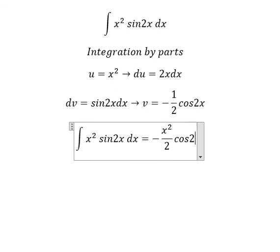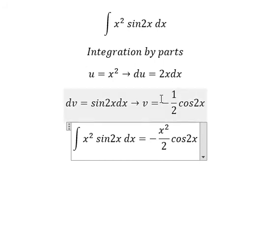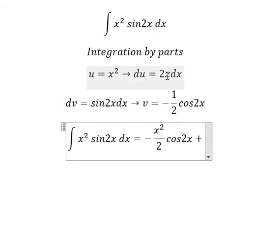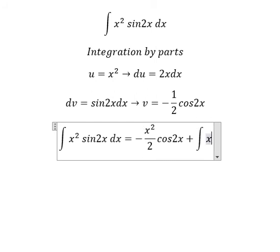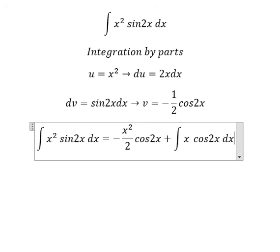So we have u multiplied by v, so we have negative x squared over 2 cos 2x. We had a negative in here and we have another negative in here, so you got a positive. The 2 multiplied by 1 over 2 will cancel, and now we have the integration x cos 2x dx.